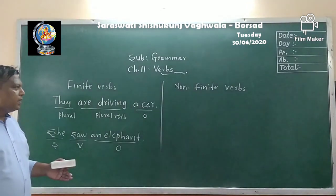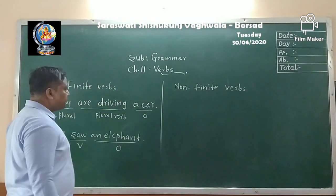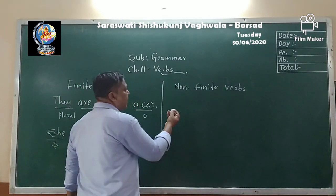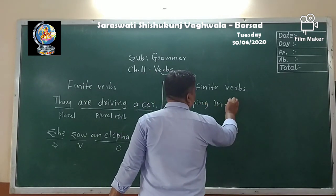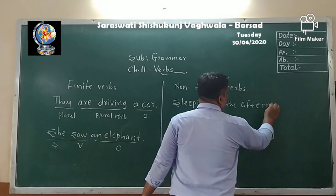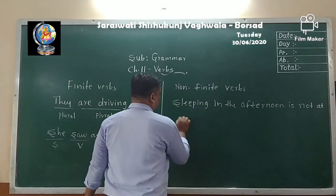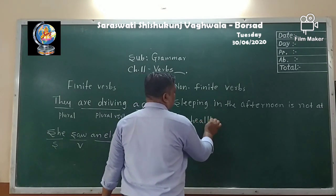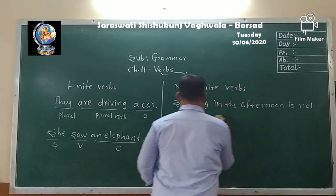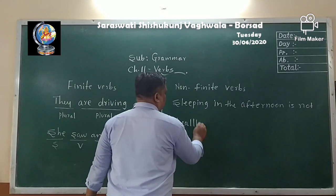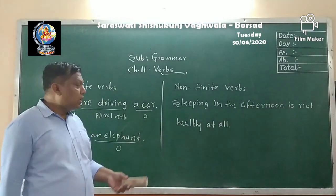Now let us learn something about non-finite verbs. Let us see an example: 'Sleeping in the afternoon is not healthy at all.' A non-finite verb will have an '-ing' form or a 'to' form — for example, 'sleeping' or 'to sleep.'